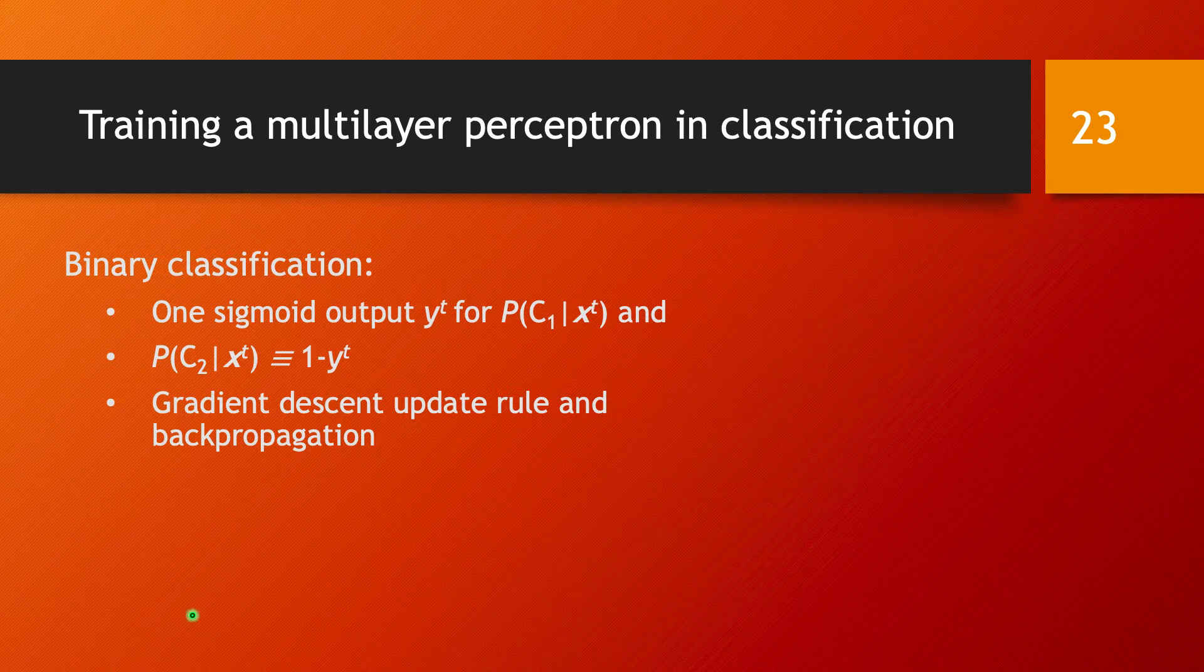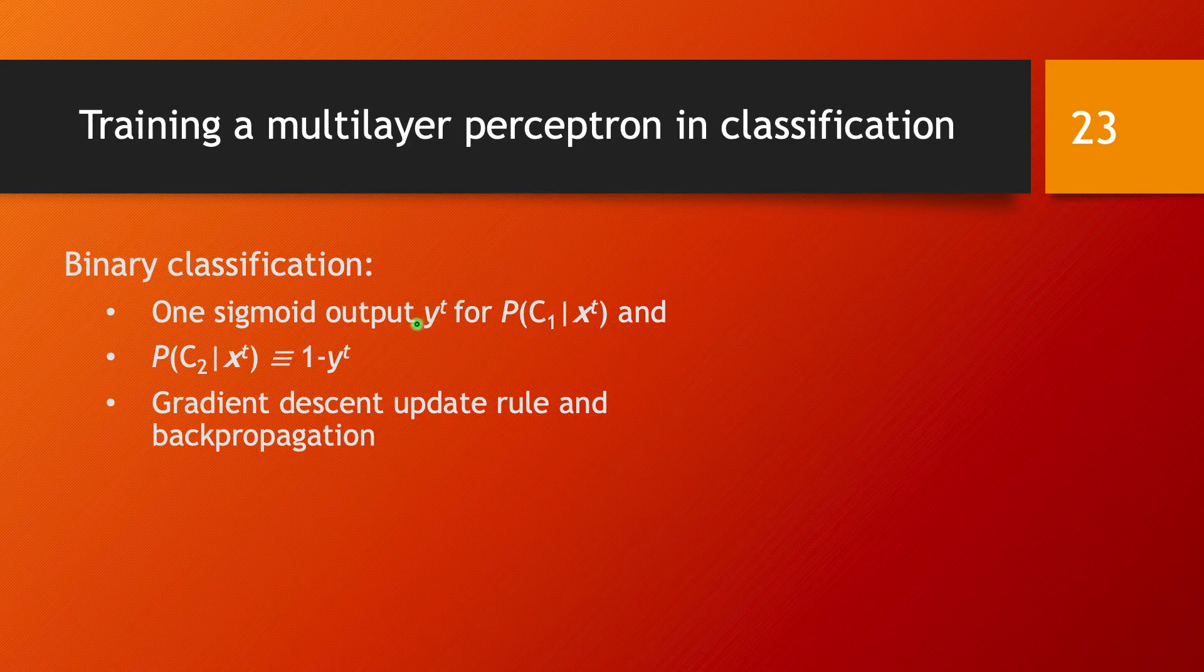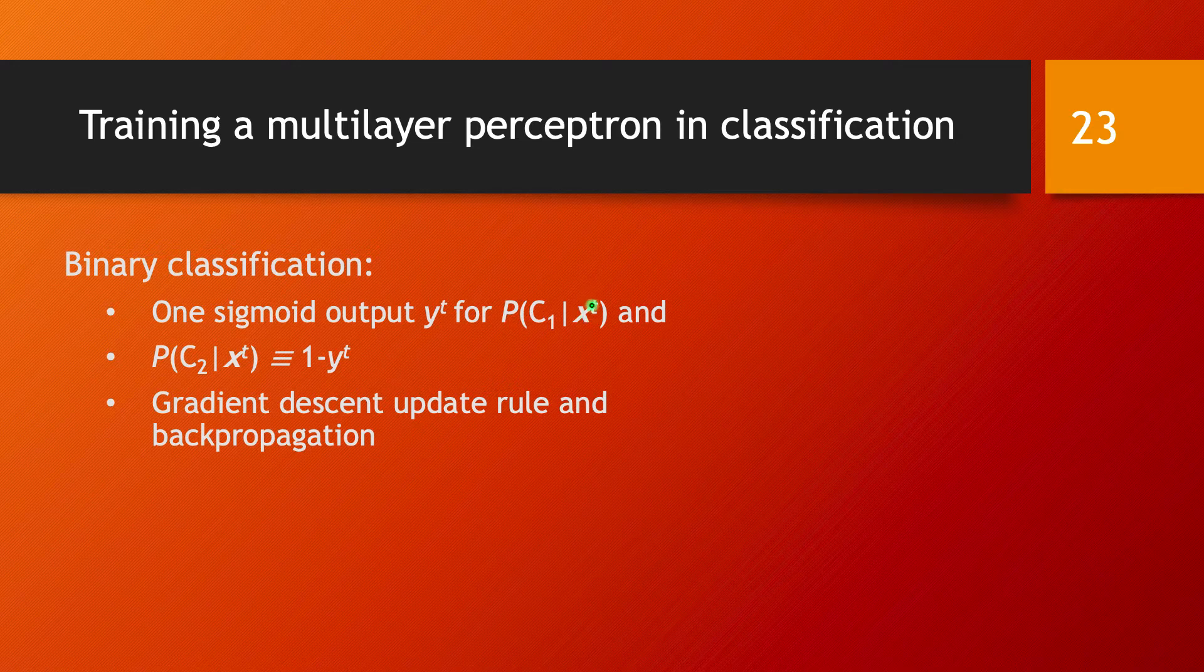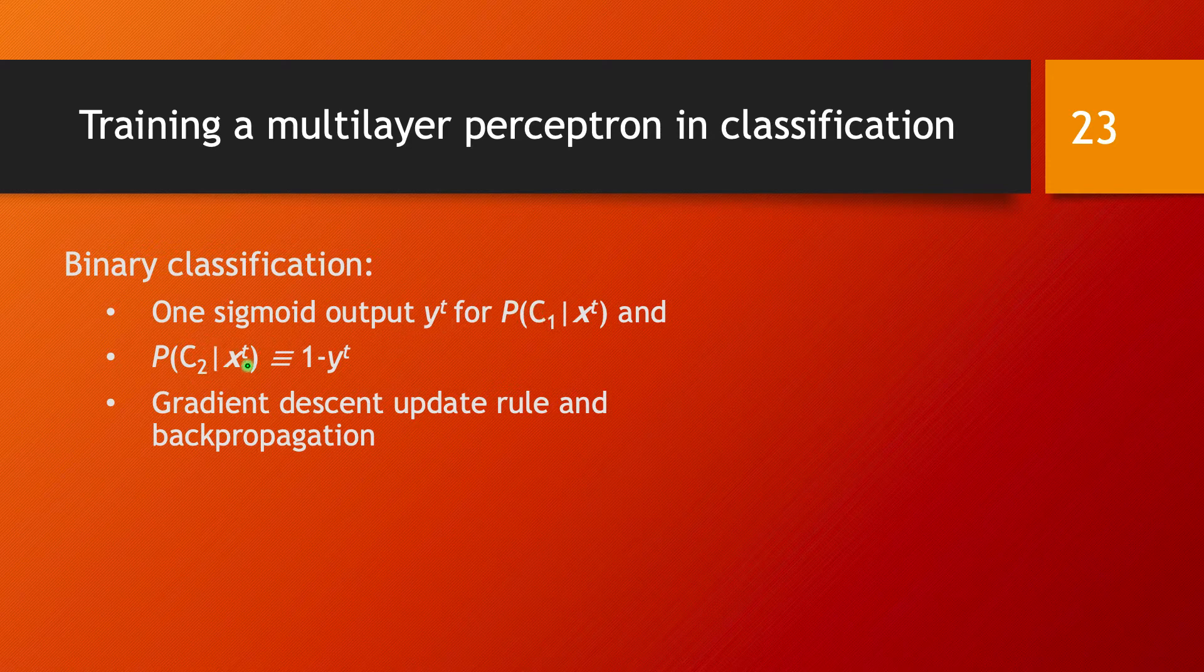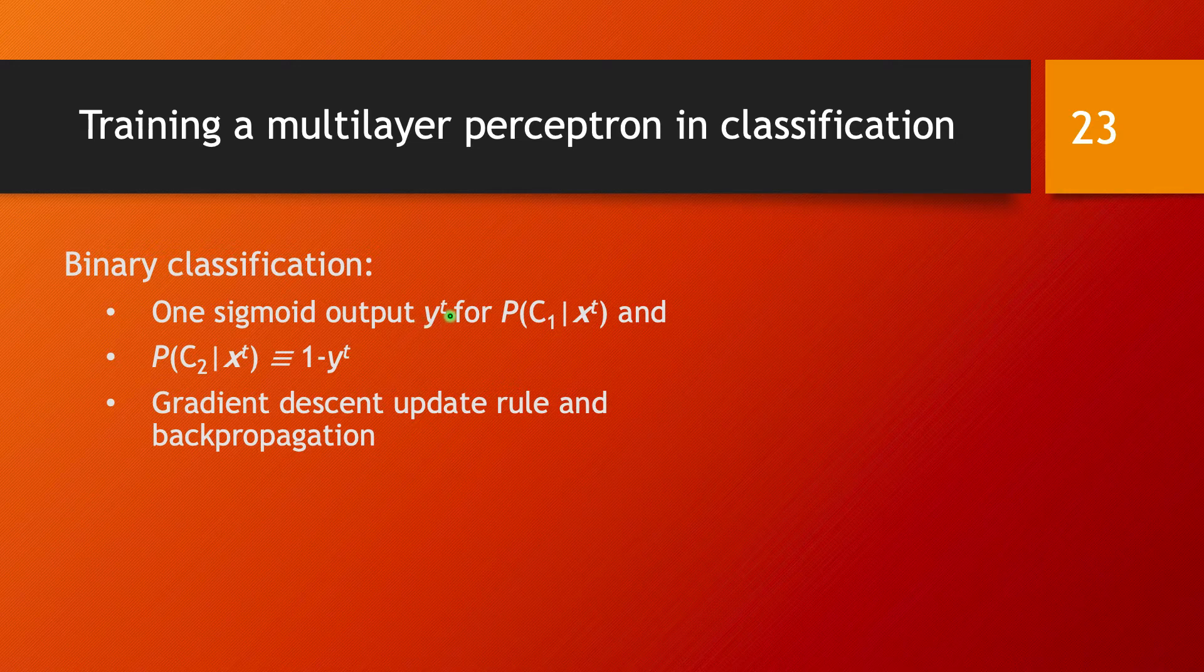The way to interpret this sigmoid function is that this single output we have is going to indicate the probability that data point x^t comes from class C1. And by default, if you want to think about class C2, it's going to be 1 minus this output we have.